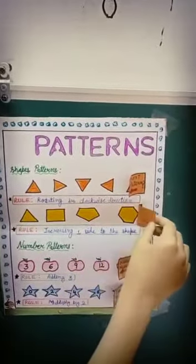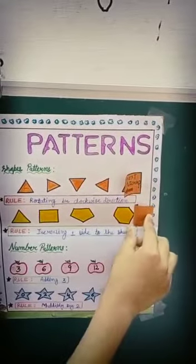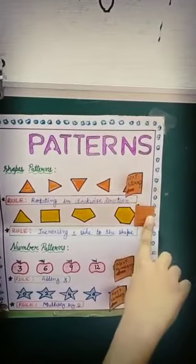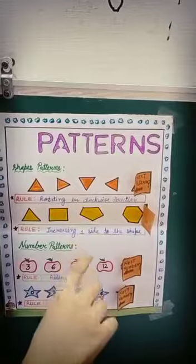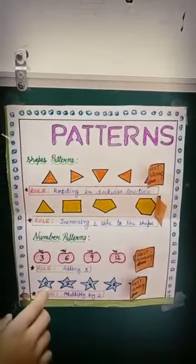So the next pattern is this shape, and the rule is increasing one side to the shape. Now, number patterns.